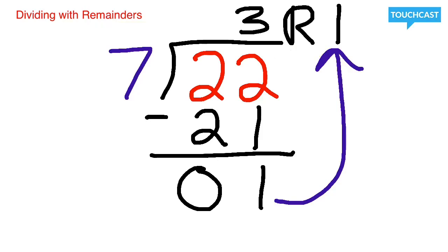After I put the R, this 1 takes its place. So our total answer right now comes down to 3, remainder 1, for the equation of 22 divided by 7.